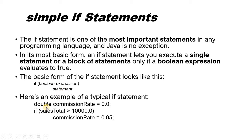For example, we have sales total. If the sales total is greater than 10,000, it will set the commission rate to 0.05. This Boolean condition is decided by the sales total. If sales total is greater than 10,000, then it is executed. Once it is false, the commission rate will not be assigned.